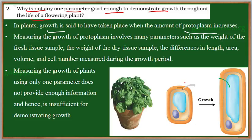For example, you can see here. This is a cell with a nucleus, vacuole, and the protoplasm, surrounded by the cell membrane and cell wall. Now if you compare these two cells — this is the cell which has undergone growth. Here the volume of the cell has increased, the size of the cell has increased, and the protoplasm content has been increased.